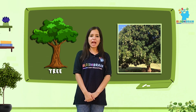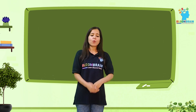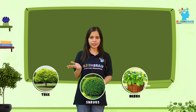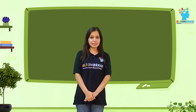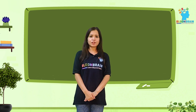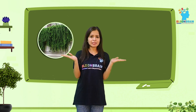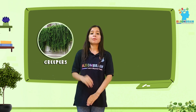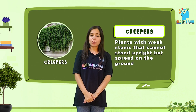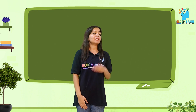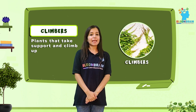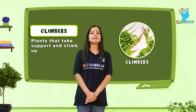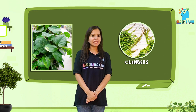According to these three aspects, you can easily differentiate which one is herb, which one is shrub, and which one is tree. The remaining two categories are creepers and climbers. In the case of creepers, plants have a very weak stem and thus cannot stand upright, and spread on the ground. For example, pumpkin plant. In the case of climbers, plants take support and climb up, and thus are known as climbers. For example, money plant.